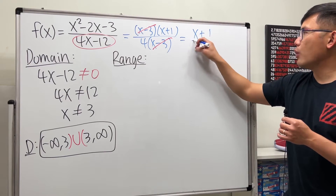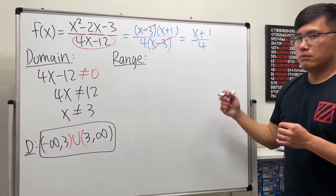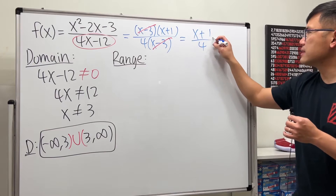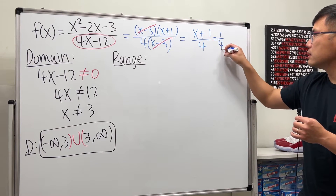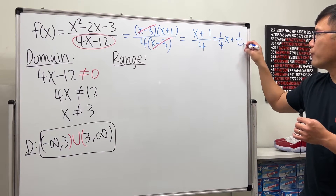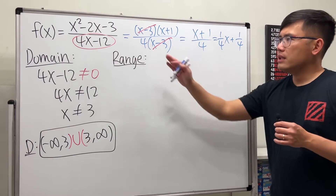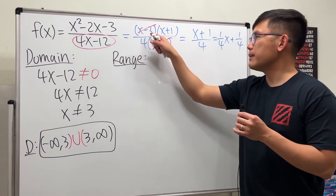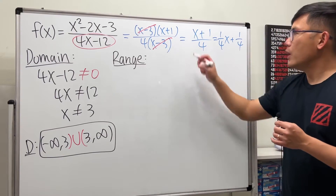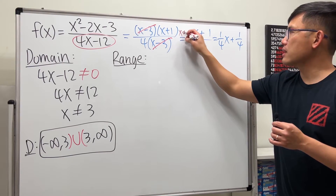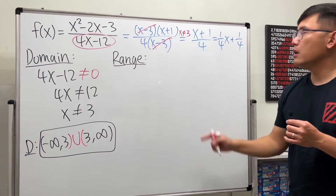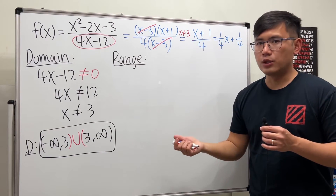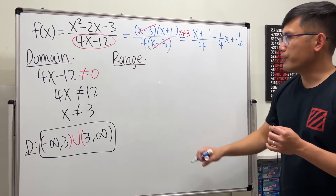After canceling, we're left with (x plus 1) over 4, which is just a line — we can write it as (1/4)x plus 1/4. However, this function is not really just a line, because when we canceled the (x minus 3) on the top and bottom, we have to note that x cannot be equal to 3.